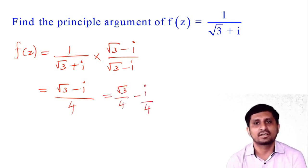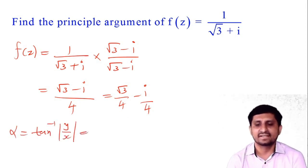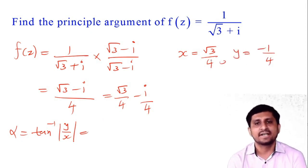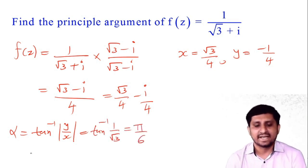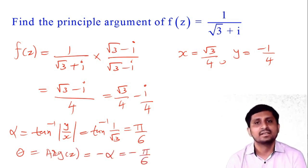Here x = √3/4 (positive) and y = −1/4 (negative), so the complex number is in the fourth quadrant. First find alpha: α = tan⁻¹(|y/x|) = tan⁻¹(1/√3) = π/6. Since the complex number is in the fourth quadrant, θ = −α = −π/6. So the principal argument is −π/6.